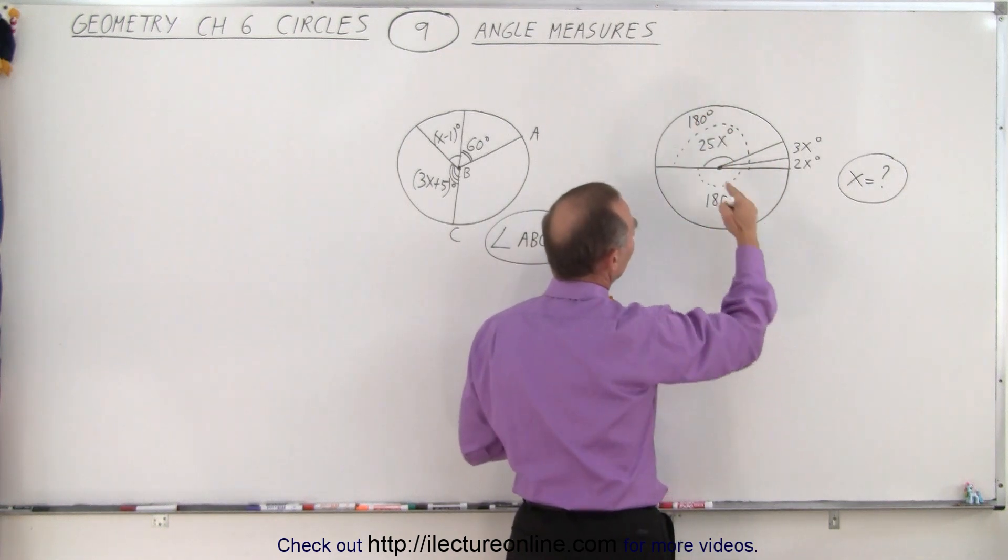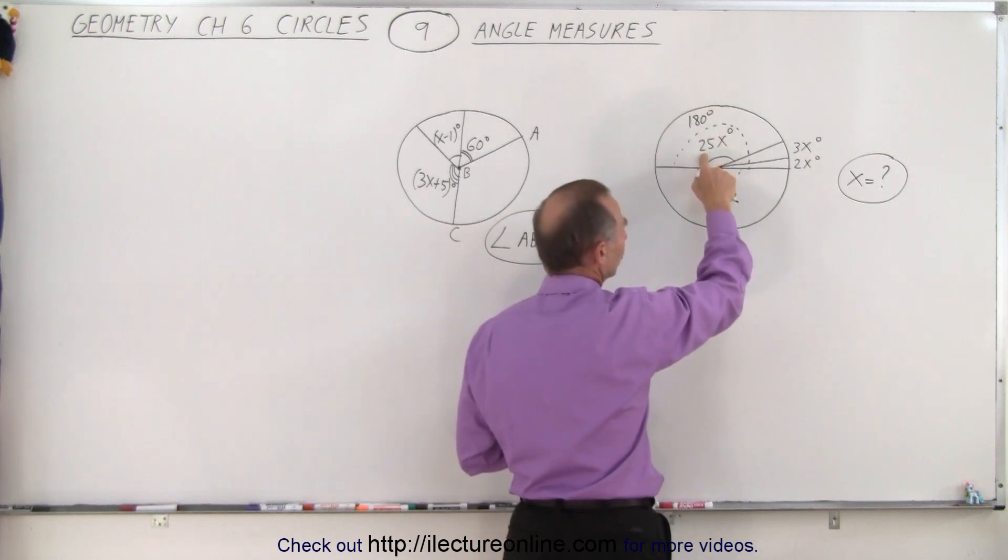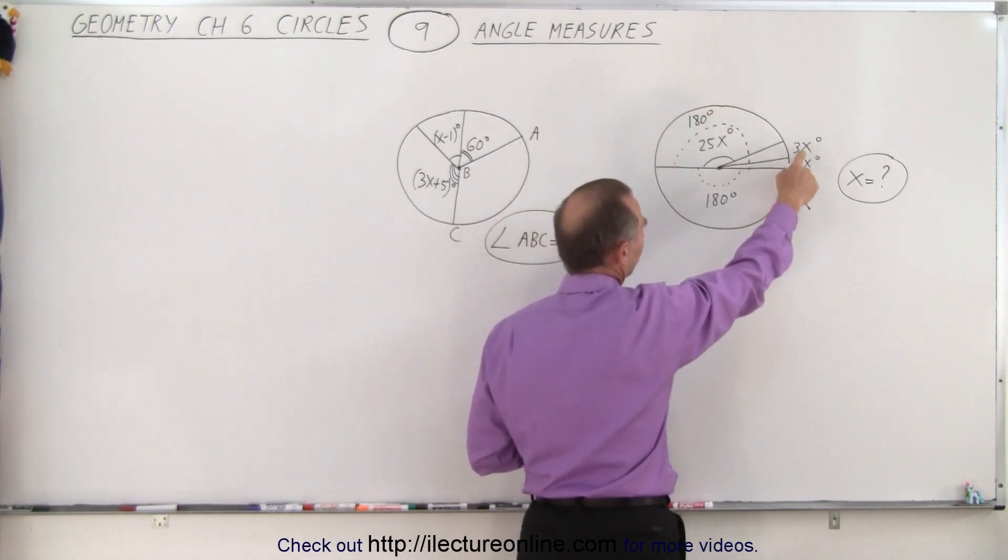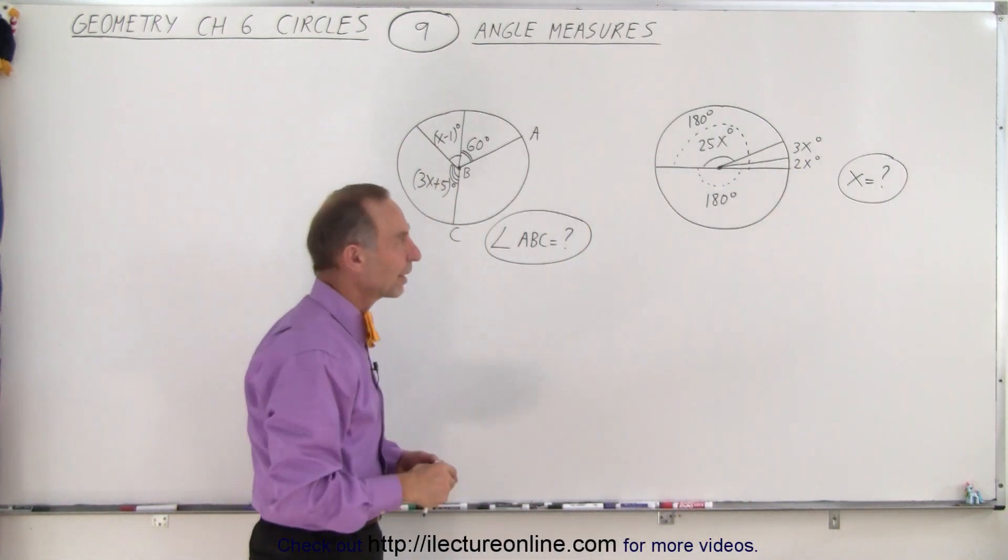So in this example we have three angles in the top half of the circle: one that's marked 25x degrees, the other one that's marked 3x degrees, the other one that's marked 2x degrees, and they want us to find the value for x.